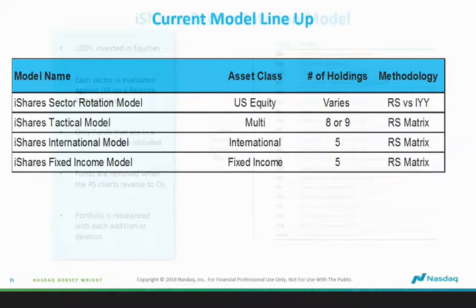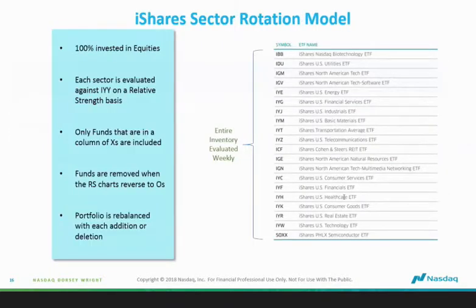Fixed income is also one of the models. The iShares sector rotation model is pretty simple — 100% invested in equity. Each sector is evaluated against the IYY on a relative strength basis, meaning every sector must do an arm-wrestling contest against the Dow Jones total market index, the IYY. Only funds that are in columns of X's are included in the model; those in columns of O's will be out. Funds are removed when relative strength reverses into O's, and the portfolio is rebalanced with each addition or deletion.